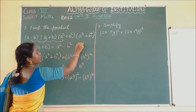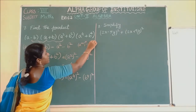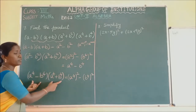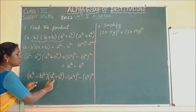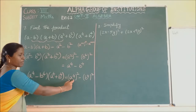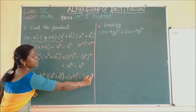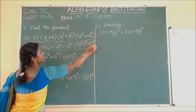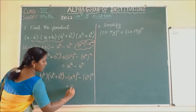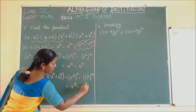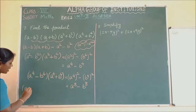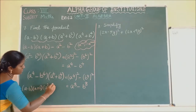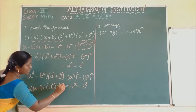Using the exponent rule, A power 4 whole square gives A power 8, and B power 4 whole square gives B power 8. So the final product of A minus B into A plus B into A square plus B square into A power 4 plus B power 4 equals A power 8 minus B power 8.